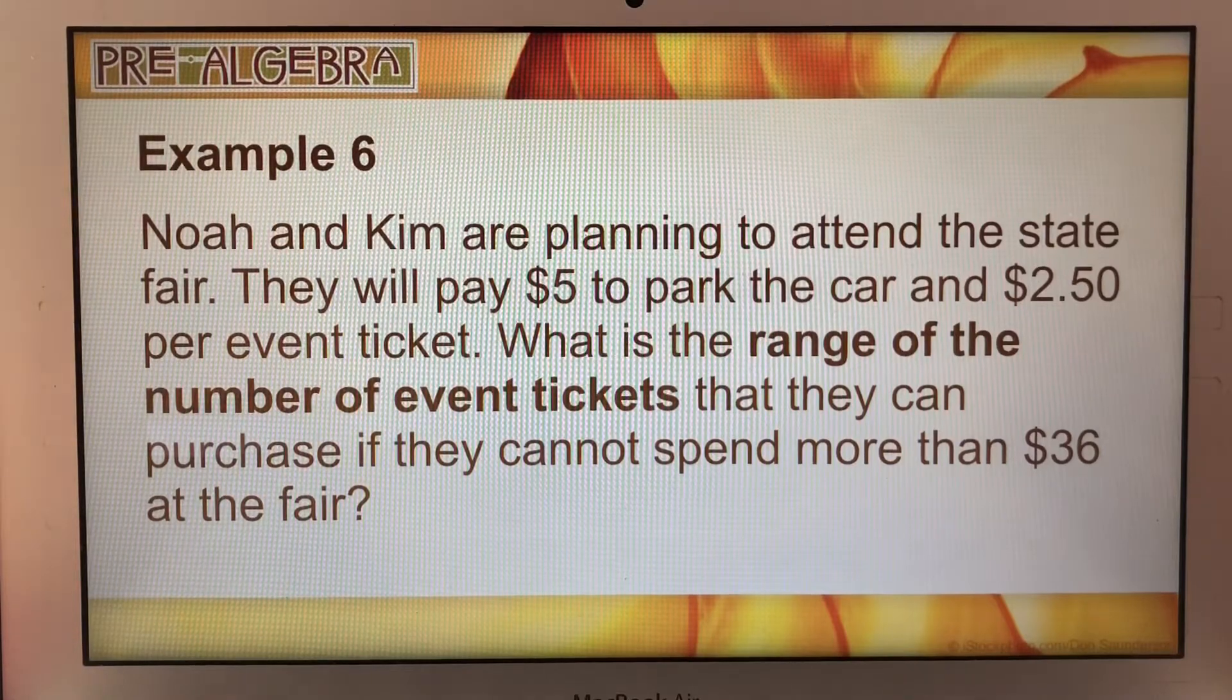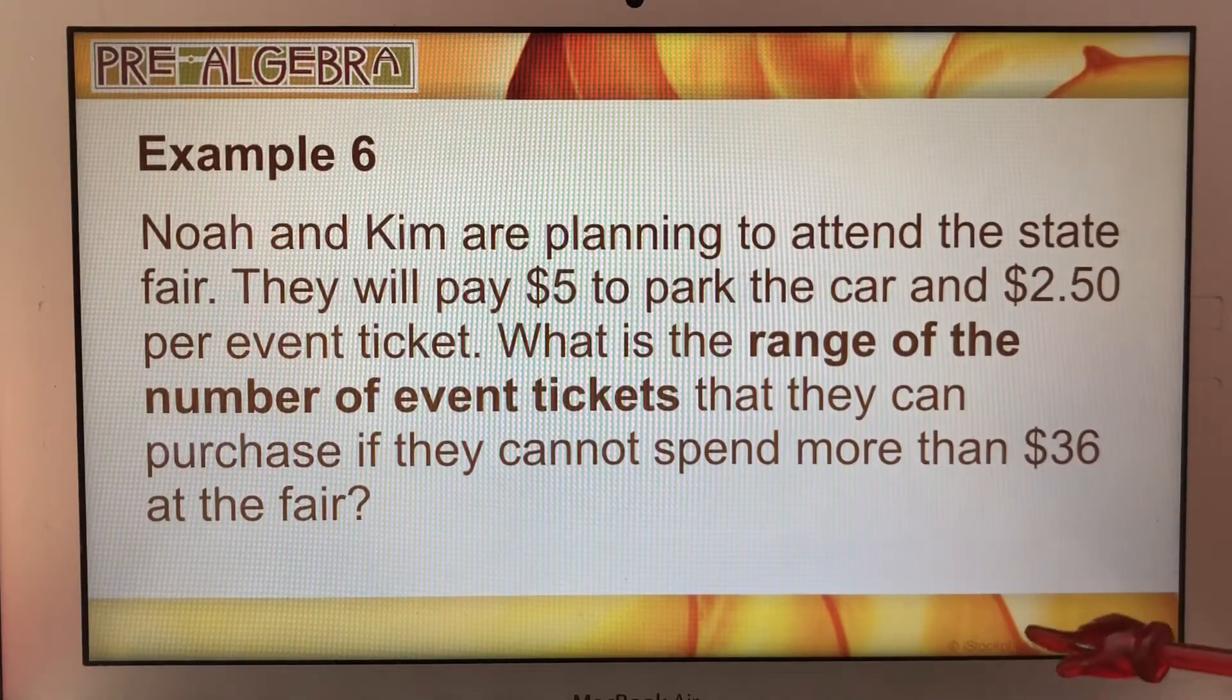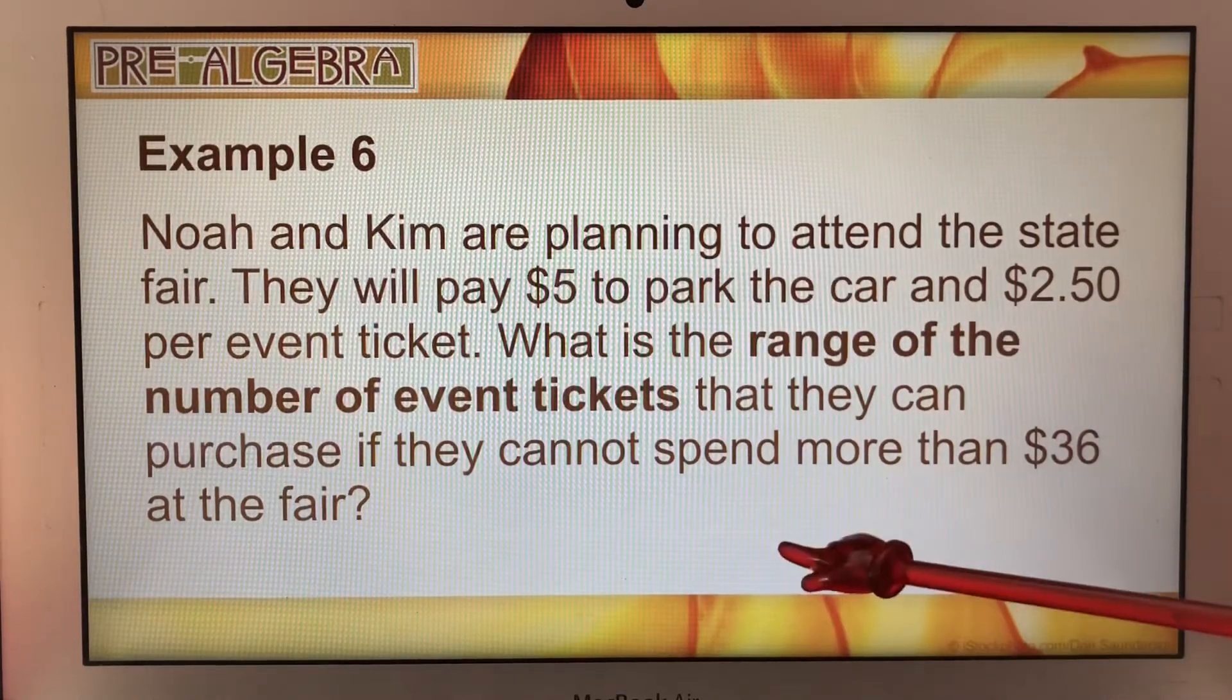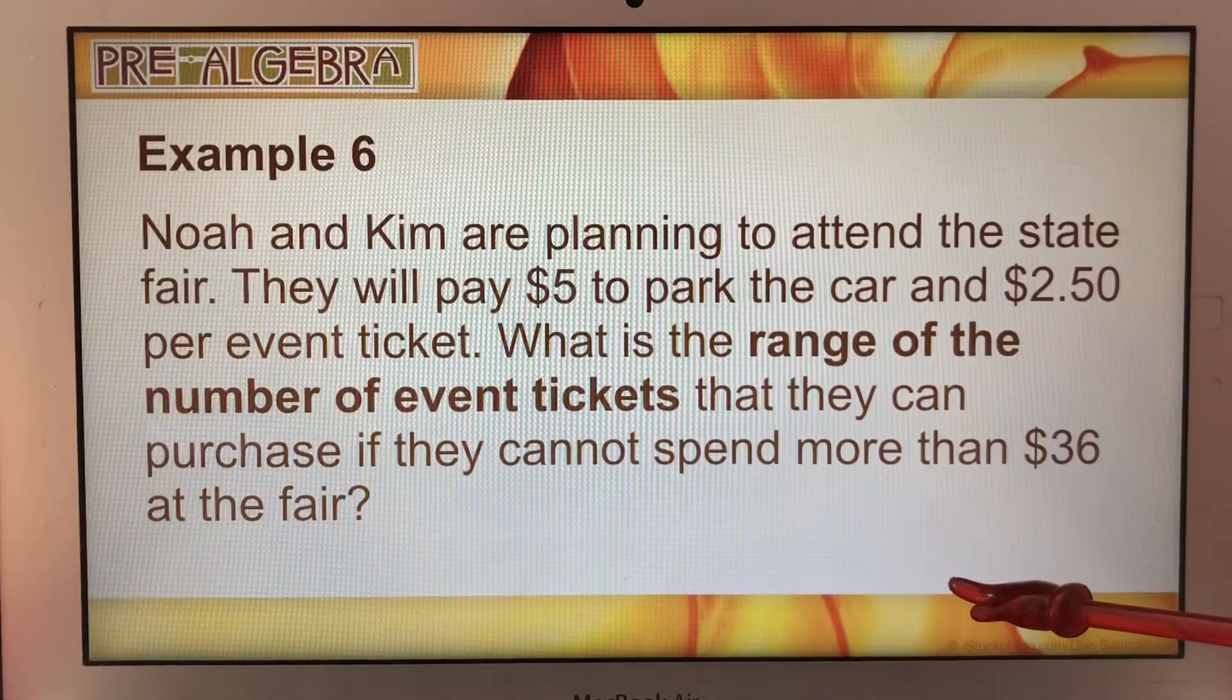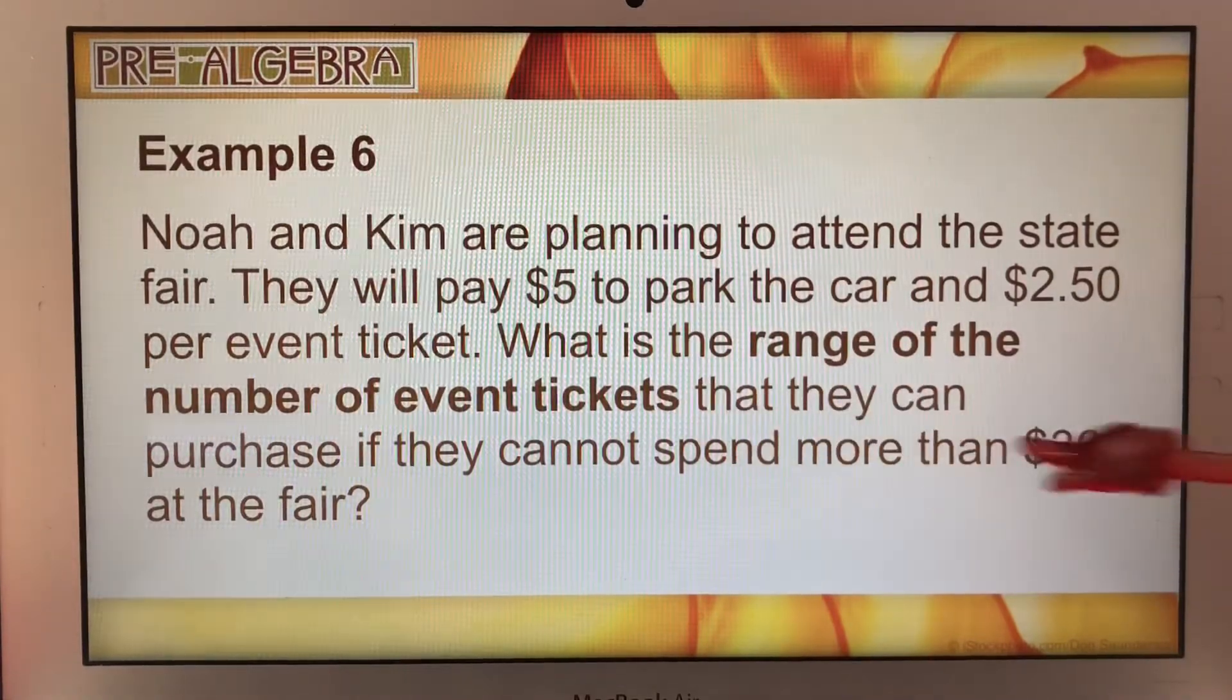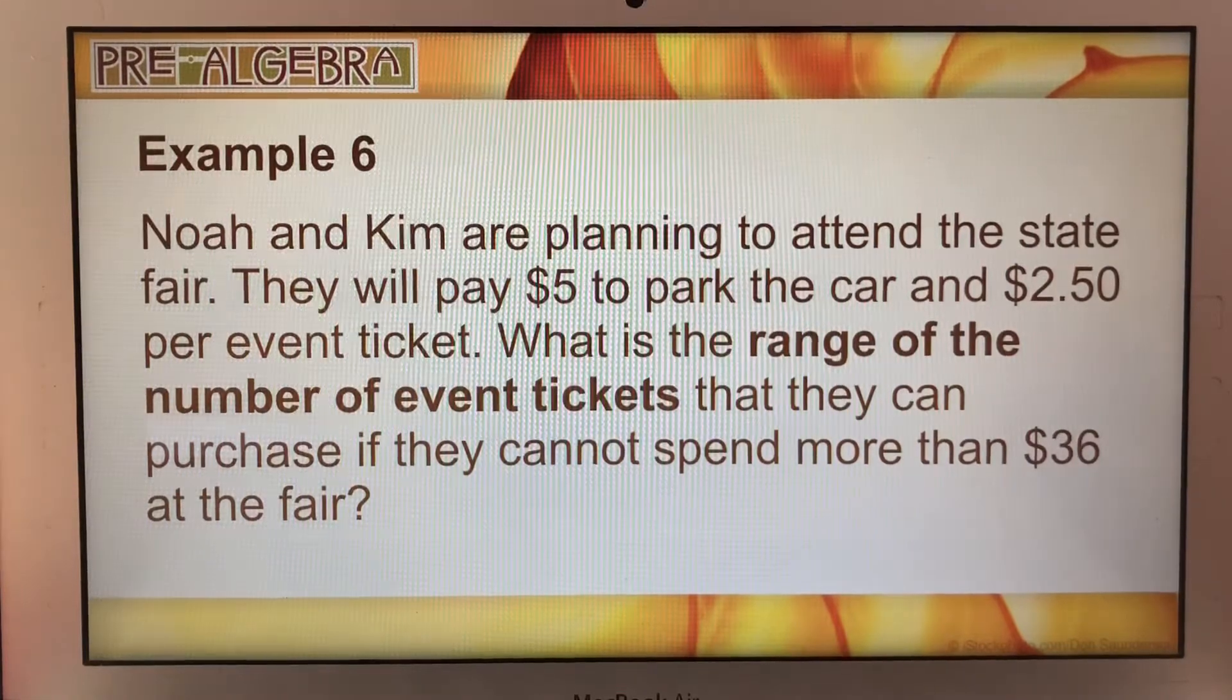So Noah and Kim, maybe their parents, have only given them $36. They have to plan $5 for parking and then $2.50 for each ticket that they need to purchase. The range of the number of tickets means how many tickets can they purchase. That's basically what it means.